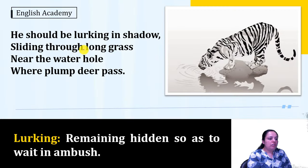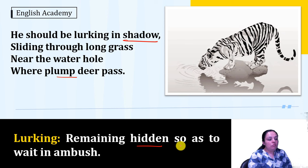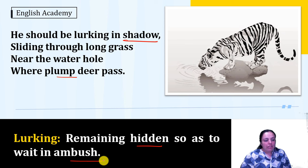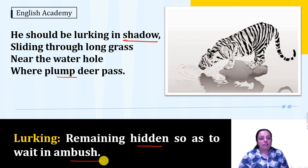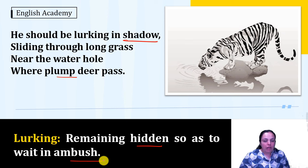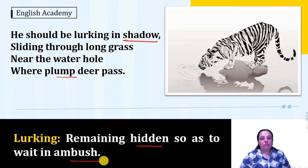In the next stanza the poet says: 'He should be lurking in shadow, sliding through long grass near the water hole where plump deer pass.' Lurking means remaining hidden so as to wait in ambush. Here the poet talks about the tiger's natural habitat, saying the tiger should be hiding behind tall grass waiting for a big fat deer to pass so that he can pounce upon it, attack it, and eat it. That is the natural activity of the tiger.